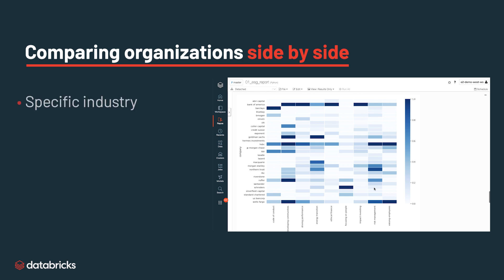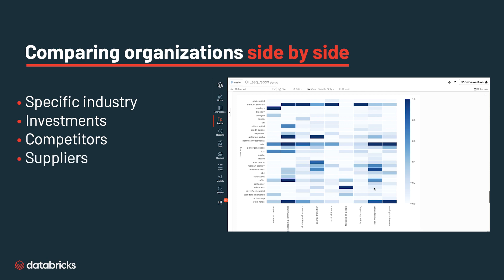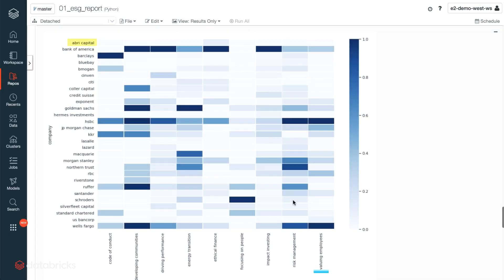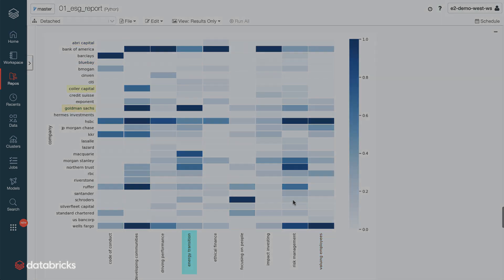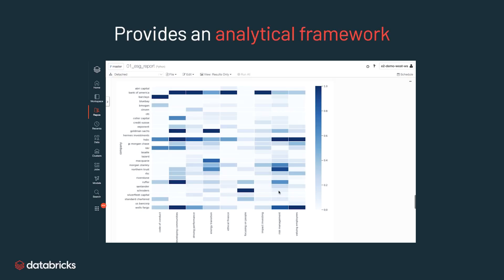If we take an example of a specific industry, or across your investments, or for your different competitors or suppliers, we can look at how much company A says they're valuing employees compared to company B, how much more company C invested in renewable energy compared to company D, and so on. This provides an analytical framework to help better understand these organizations and how they differ in their ESG activities.